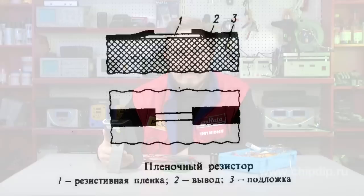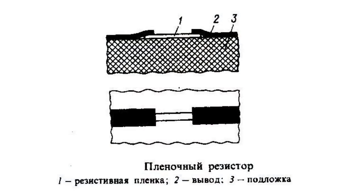This image shows the structure of a film resistor. Resistivity of film resistors is expressed in special measurement units — ohms per square — because the resistance of a square-shaped film does not depend on the size of such a square.